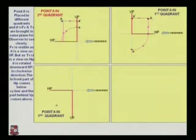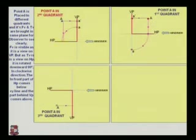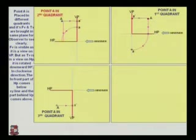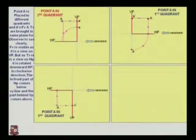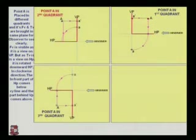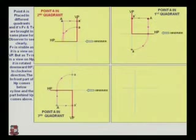For the third quadrant, the direction of the observer remains the same. When the observer looks from the front view, the projection on the vertical plane is denoted as a'. When the observer looks from the top view, the projection is on the horizontal plane and is rotated 90 degrees clockwise, placing point A on the same vertical line as a'.